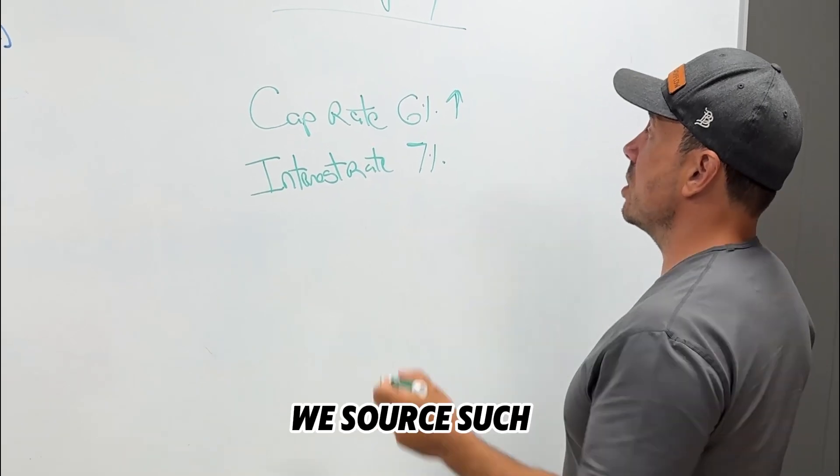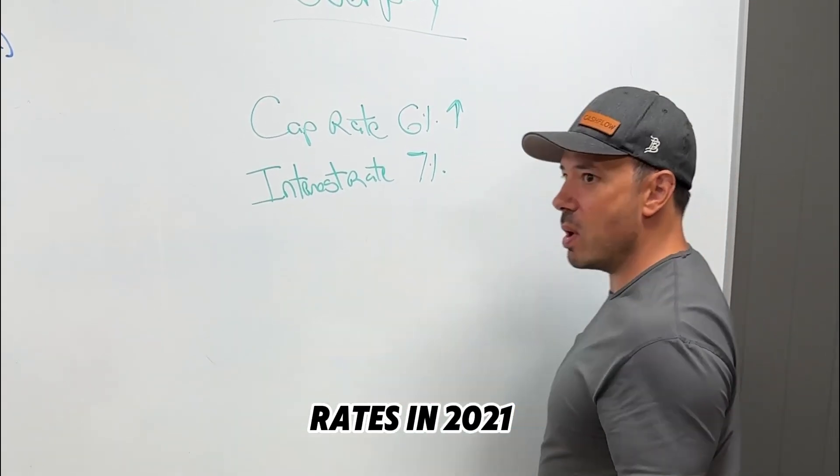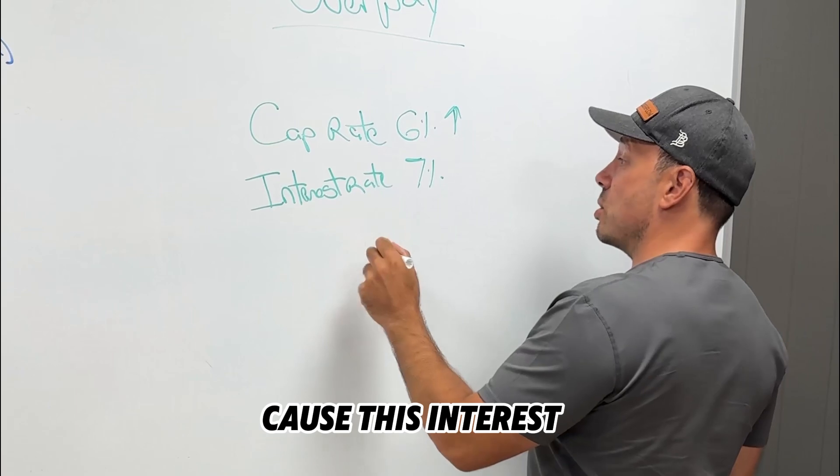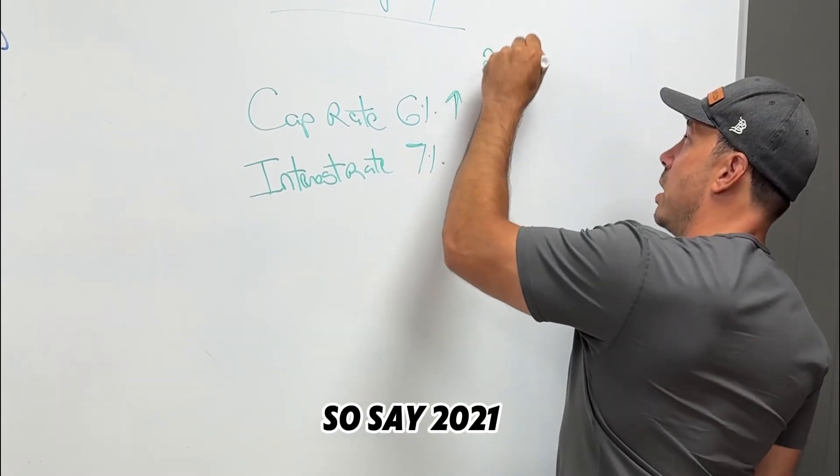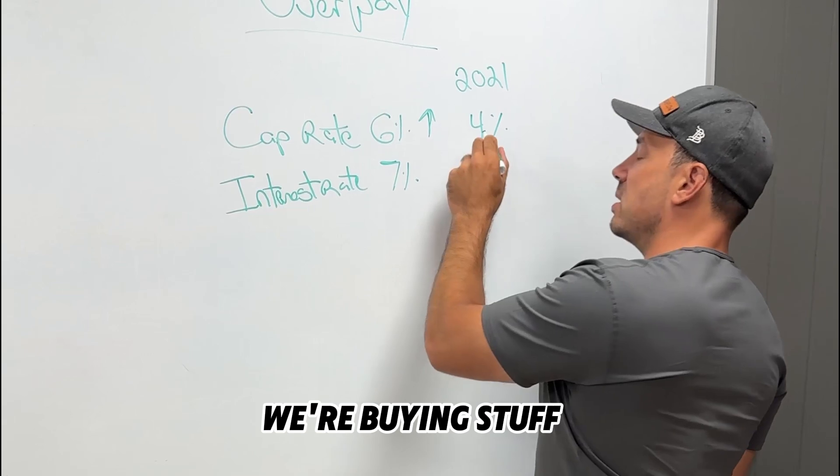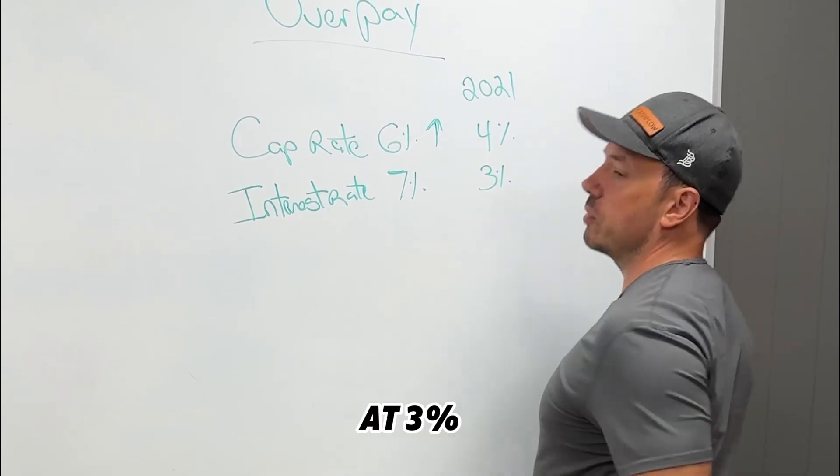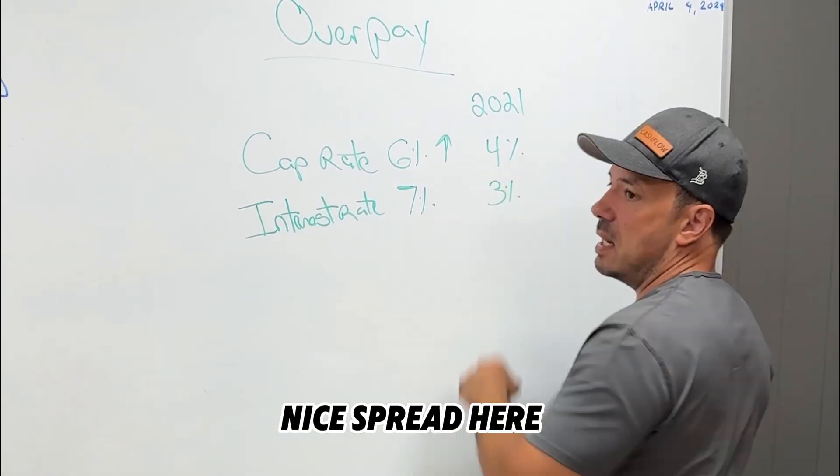The reason that we saw such low cap rates in 2021 and 2022 is because the interest rate, say 2021, that interest rate was 3%. We're buying stuff at a 4 cap, we're borrowing money at 3%. We have a nice spread here.